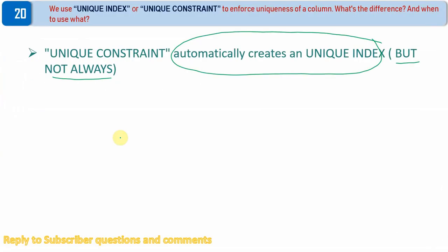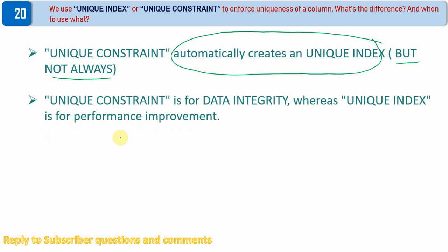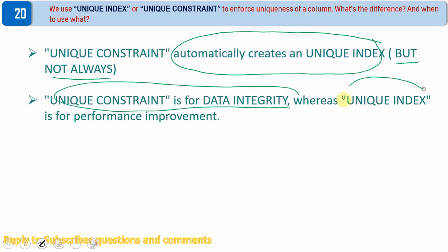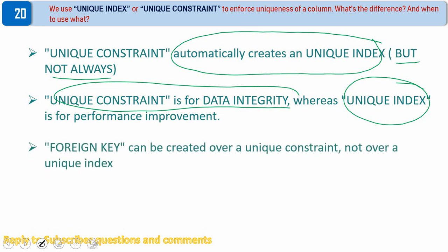So that is the first point. The second point is that a unique constraint is mainly for data integrity purposes, whereas a unique index is for performance improvement. The third point is we can create a foreign key over a unique constraint only, not on a column having only a unique index. So if you have a plan to use that column for foreign key references, then create a unique constraint rather than a unique index.